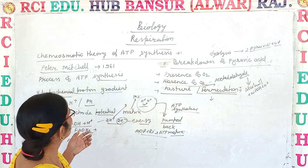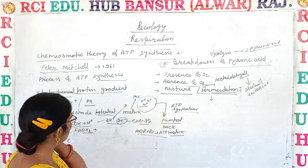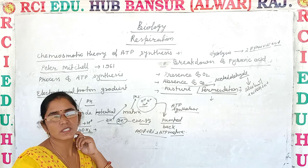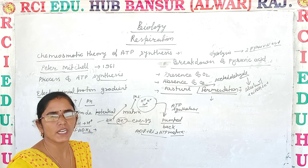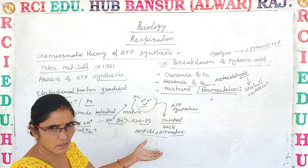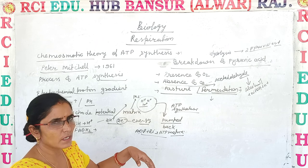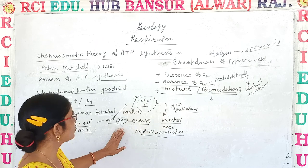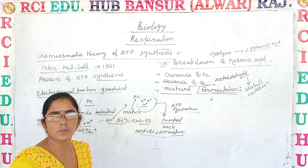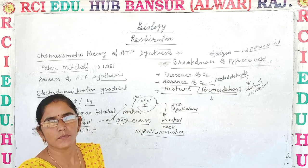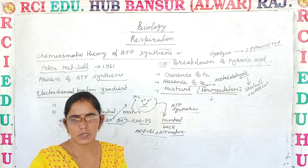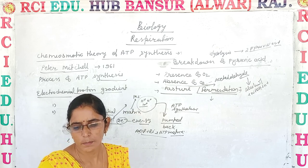In this video we discussed two main topics: the chemiosmotic theory of ATP synthesis, which relates to what was already discussed in the Krebs cycle and electron transport chain, and second, the breakdown of pyruvic acid. Have a good day. Bye.